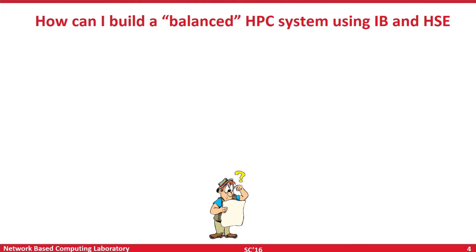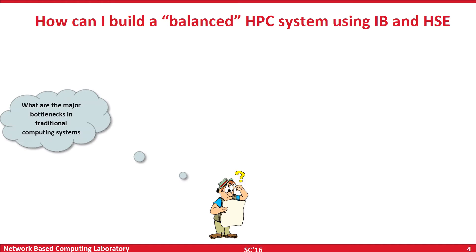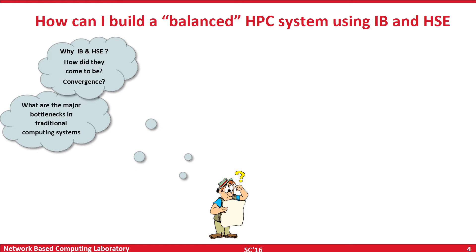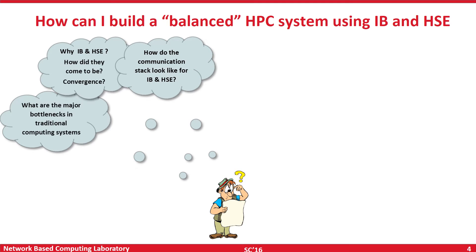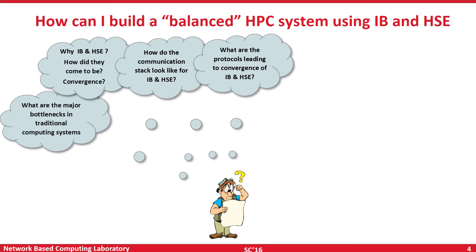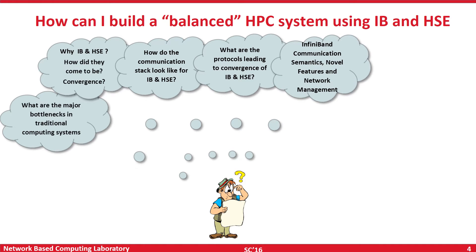In this context, a lot of people are asking questions like how to build a balanced HPC system using emerging interconnect technologies like InfiniBand and high-speed Ethernet. Questions include: what are the major bottlenecks in traditional computing systems, what is InfiniBand, what is high-speed Ethernet, why they came into the market, what kind of convergence is taking place, how do the communication stacks look for both InfiniBand and high-speed Ethernet, what are the protocols leading to convergence, and what are the detailed communication semantics, novel features, and network management aspects.